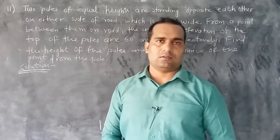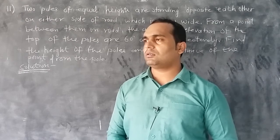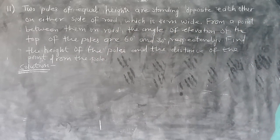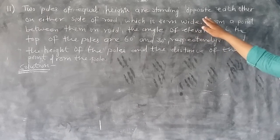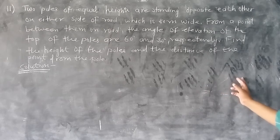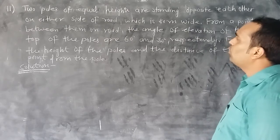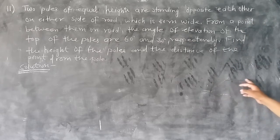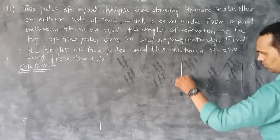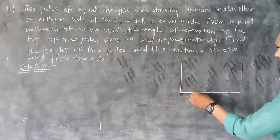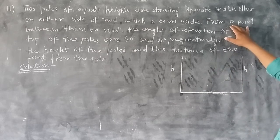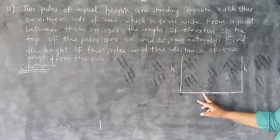Hello students. In this video we will solve Exercise 9.1, Question 11: Two poles of equal height are standing opposite each other on either side of a road. The road is 80 meters wide. From a point between them on the road, the angles of elevation to the tops of the poles are observed.